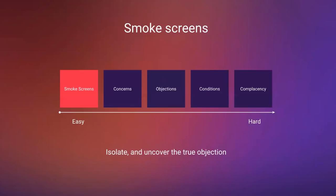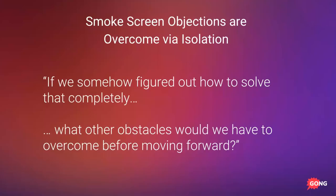Your technique for overcoming a smoke screen objection is isolation. Your job is simply to peel the onion and find the real objection. Your phrase again: 'If we somehow figured out how to solve that completely, what other obstacles would you have to overcome before moving forward?' That is how you get past smoke screen objections — the true objection will surface after you've asked this question.